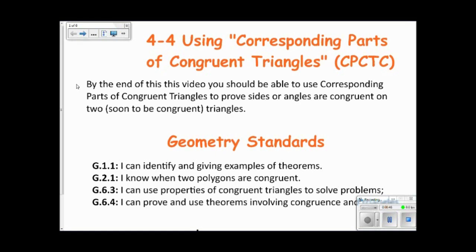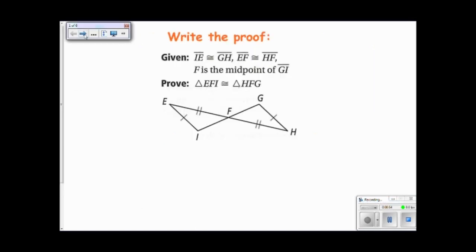This video covers section 4-4 and it is about using corresponding parts of congruent triangles. We'll start off by writing a proof given that segment IE is congruent to segment GH, segment EF is congruent to HF, and F is the midpoint of GI.